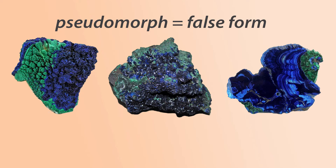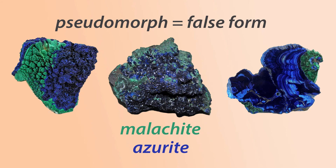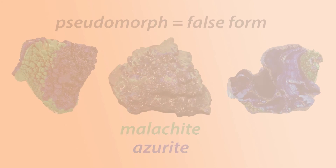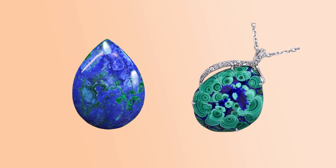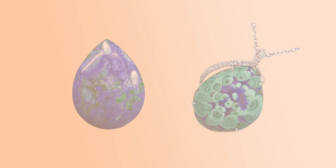These samples usually have some of both minerals present. One of the more famous examples of a pseudomorph is the malachite-azurite combo. Malachite slowly replaces the azurite by losing its hydroxyls in a chemical change, and since they're both such bright and beautiful colors, this makes their combination a popular gemstone.